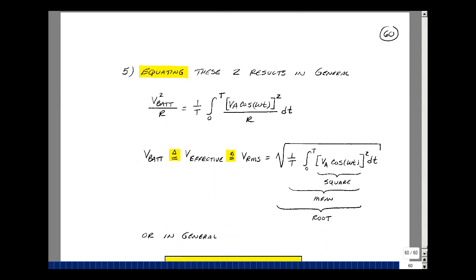Let's take this example and create a general expression for the effective voltage. In the last example, we had the battery squared over R, and that would be equal to 1 over period integral of our voltage squared divided by R. Let's solve for the battery voltage.